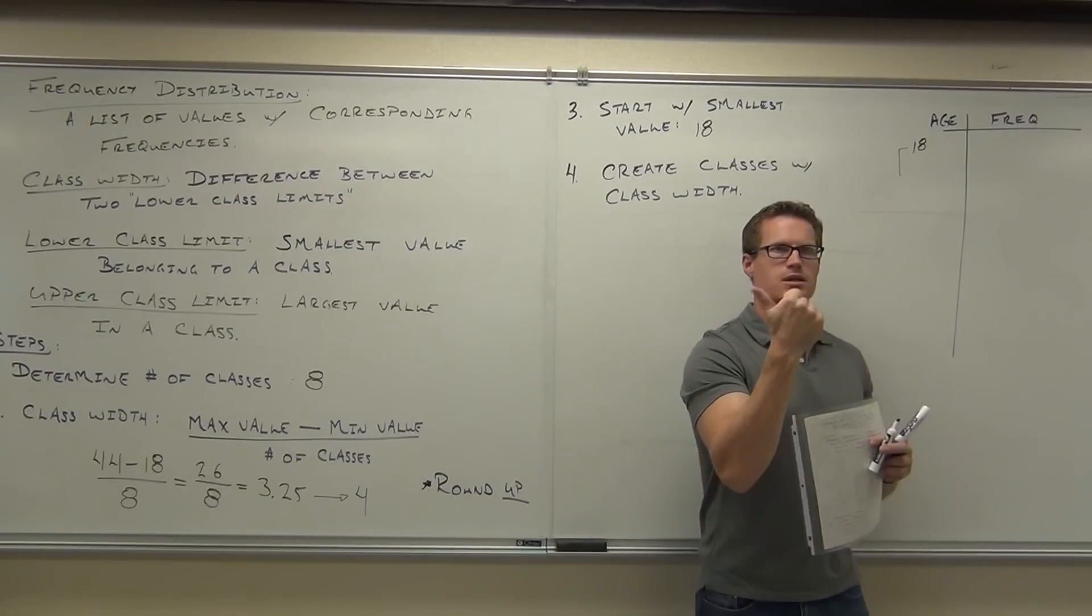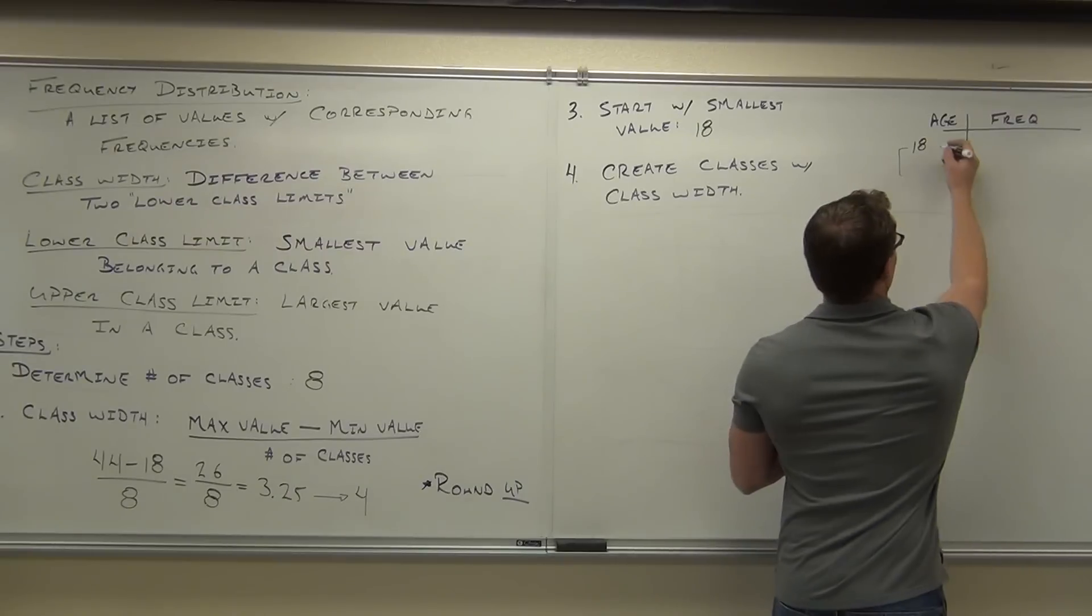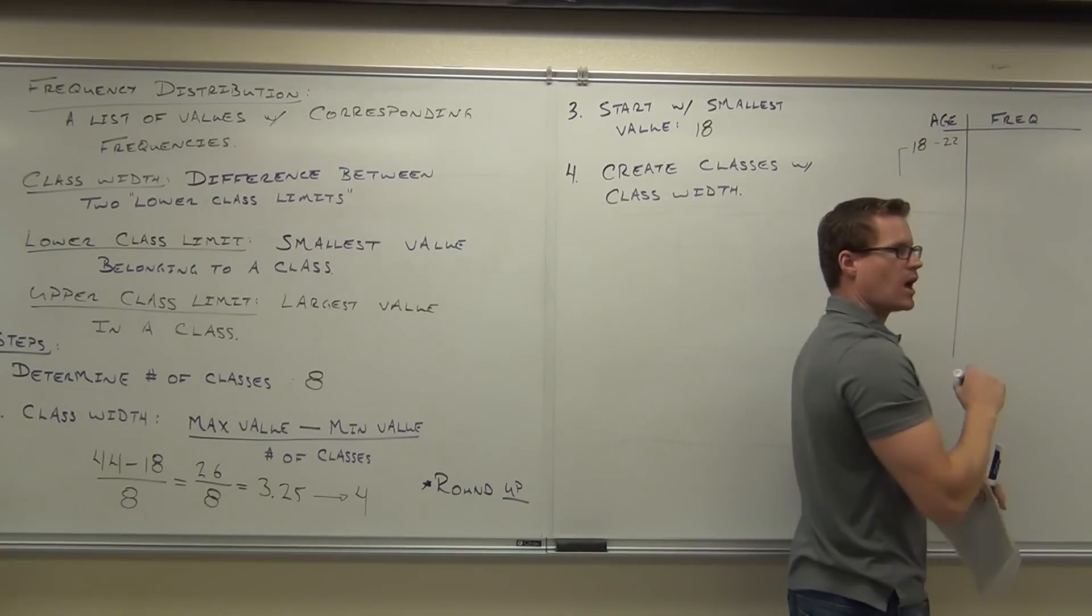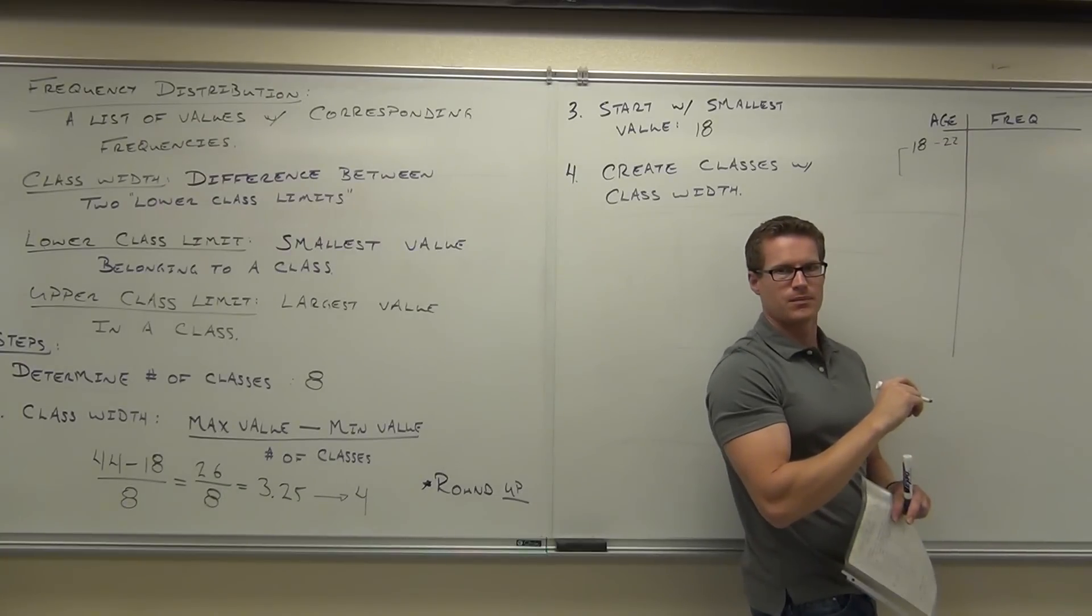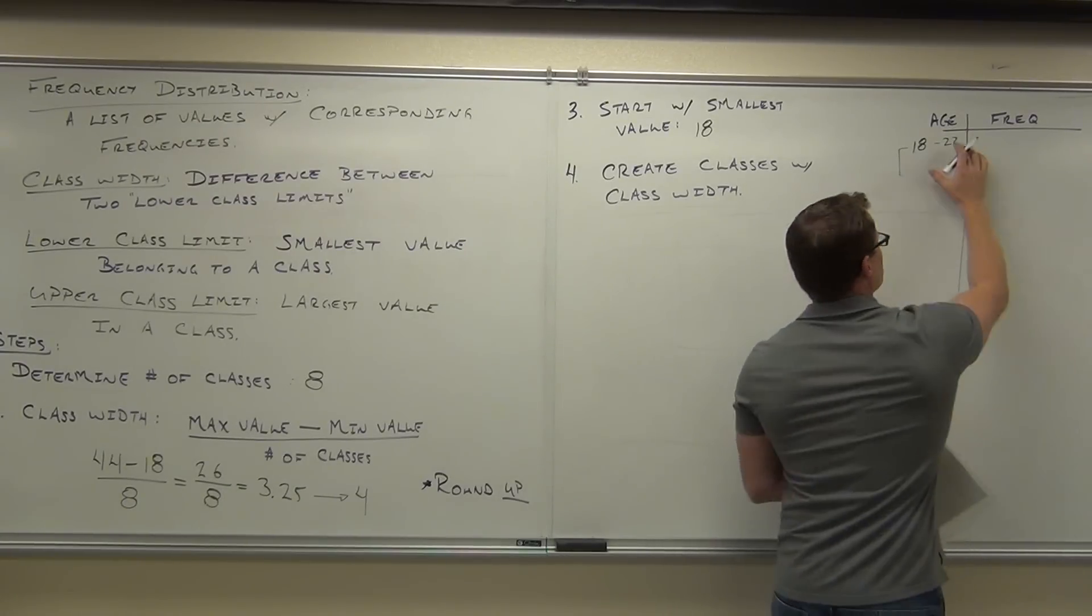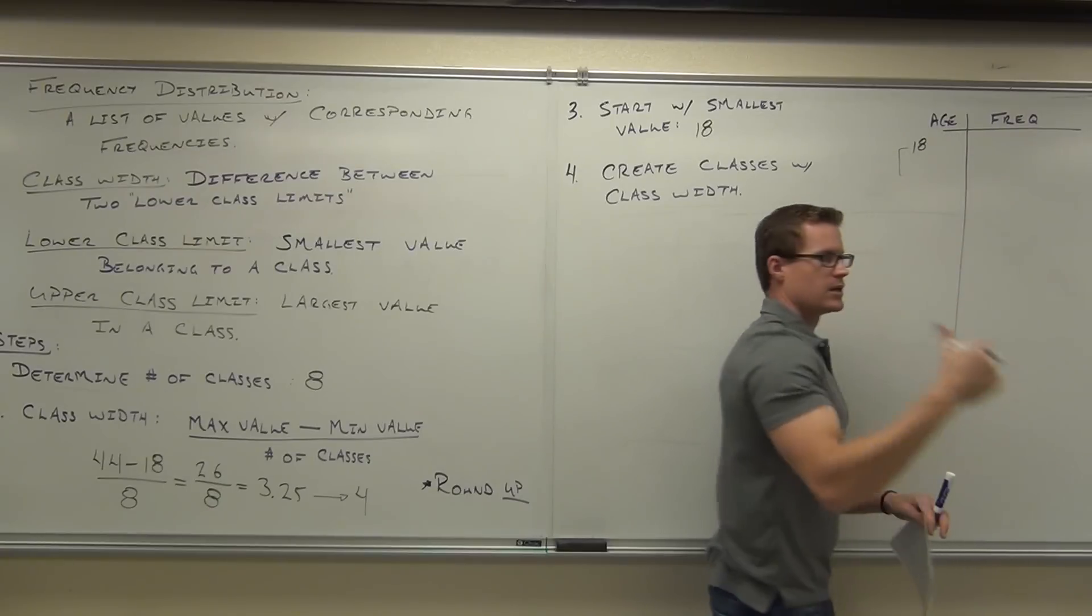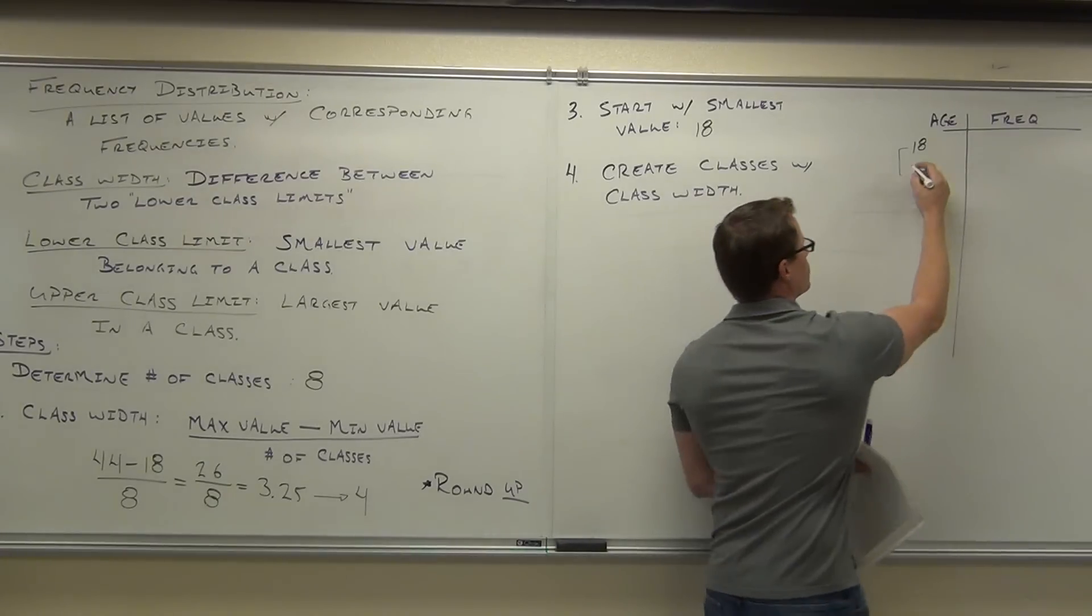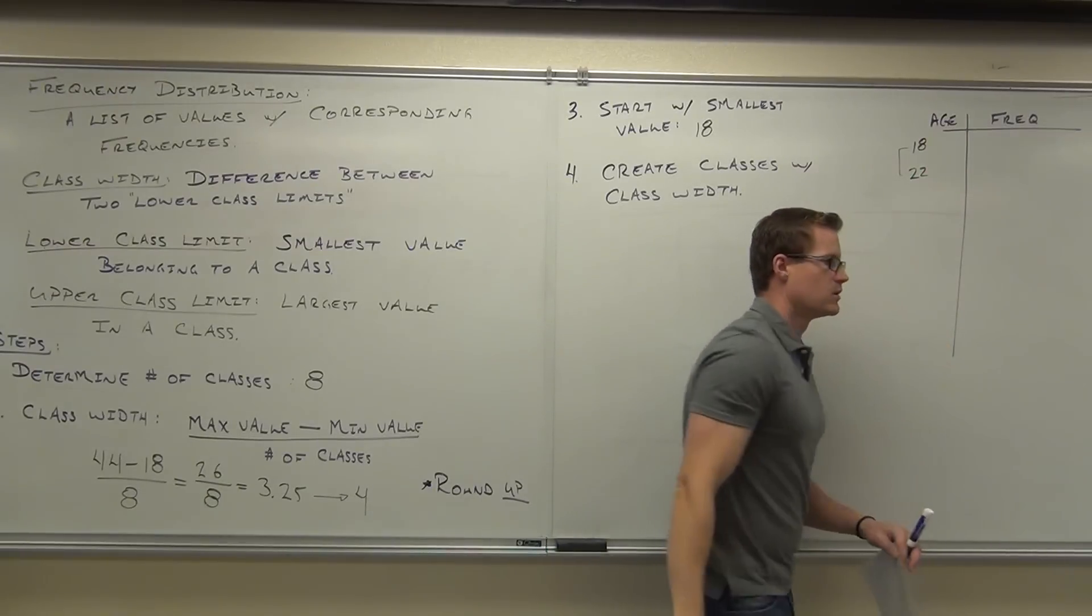We're not going to go 18, 19, 20, 21, 22. We're not going to do that. We're going to do 18, 19, 20, 21, 22 goes here. Why?